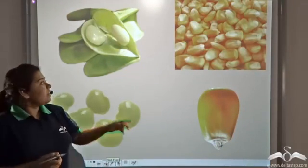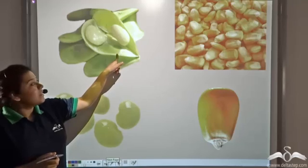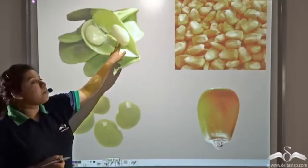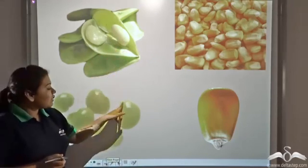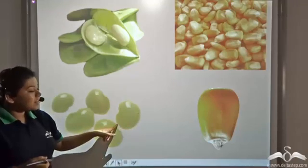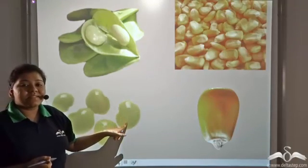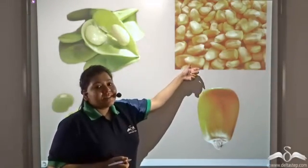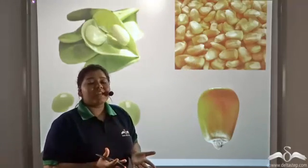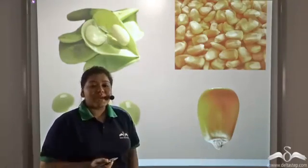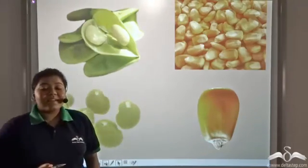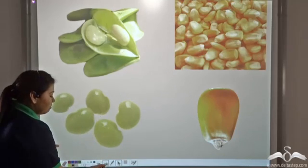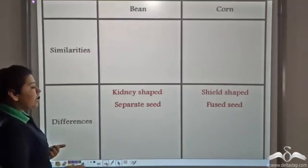If you cut open a bean, you will see the seeds are separated from the covering. These are the seeds of a bean. But if you see a corn, the seed and the covering remains fused together. So this is the second difference between bean and corn.